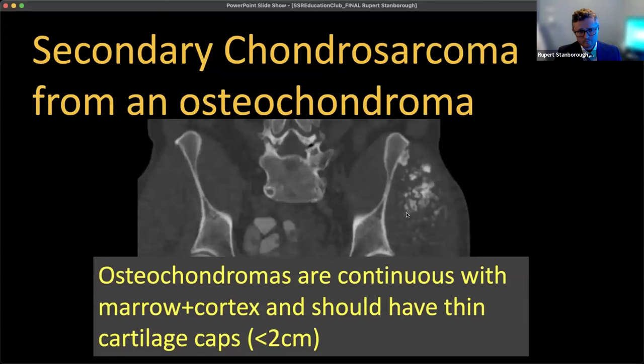Osteochondromas have little thin cartilage caps on them, usually less than two centimeters. Unfortunately, occasionally these things will undergo malignant transformation — the cartilage cap will turn into a chondrosarcoma. So the correct response in this case is secondary chondrosarcoma, because it's associated with the osteochondroma. The CT image nicely shows that little pedunculated osteochondroma whose cartilage cap has now turned into that chondrosarcoma, this big mass.